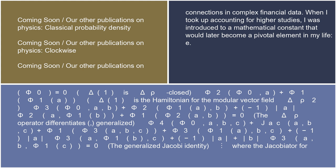Continuing: phi_4(phi_0, A, B, C) + Jac(A,B,C) + phi_1(phi_3(A,B,C)) + phi_3(phi_1(B), C) + (−1)^|A| phi_3(A, phi_1(B), C) + (−1)^(|A|+|B|) phi_3(A, B, phi_1(C)) = 0 — the generalized Jacobi identity, where the Jacobiator Jac (the 2-bracket phi_2) is defined as Jac(A_1, A_2, A_3) = (1/2) sum_{π ∈ S_3} (−1)^ε phi_2(phi_2(A_{π(1)}, A_{π(2)}), A_{π(3)}).